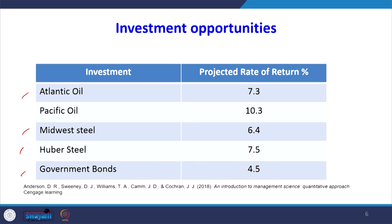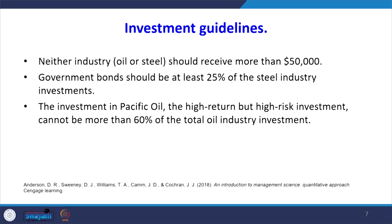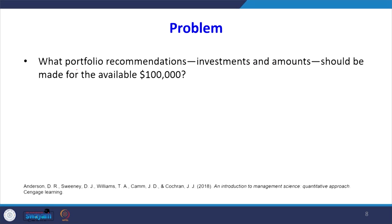In this problem we are maximizing the rate of return. There are some guidelines given by the company: neither the oil nor the steel industry should receive more than $50,000; government bonds should be at least 25% of steel industry investments; the investment in Pacific Oil — a high return but high risk investment — cannot be more than 60% of total oil industry investment. The question is: what portfolio recommendations should be made for this $100,000?